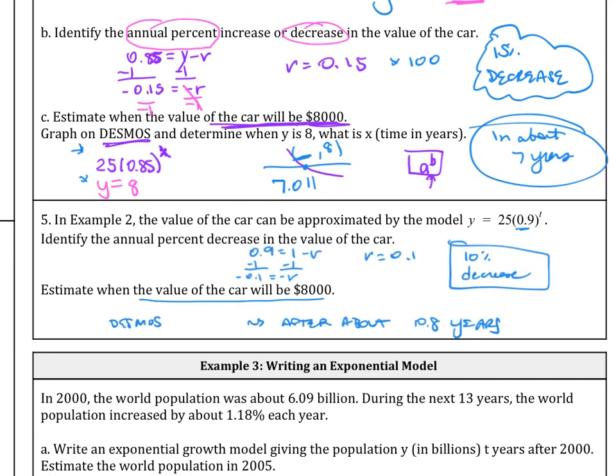So if we try this out, you would find that 0.9 equals 1 minus r, so r is 0.1, or the percent decrease is 10%. Then you plug it into Desmos, plug in the equation 25 times 0.9 raised to the x, and then you make the equation y equals 8, and you'll find it'll be that after about 10.8 years.